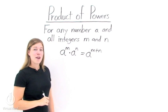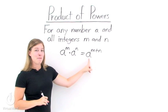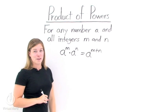In other words, if we have two things being multiplied together with like bases, we can keep that one like base and simply add the exponents together.